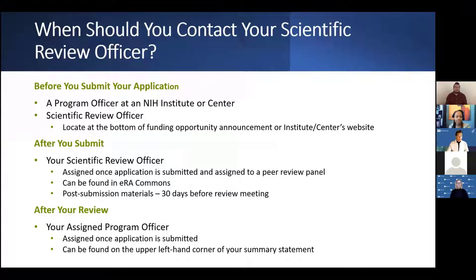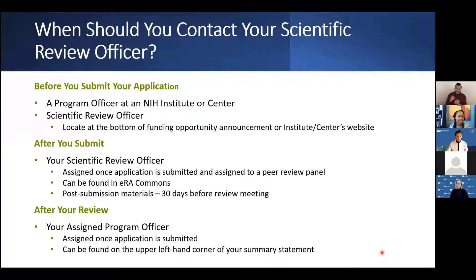Before you submit your application, if you have questions regarding whether a particular institute or center is appropriate for your application, that's when you contact a program officer. If you have questions regarding what study section to submit your application to, that's when you contact a scientific review officer. You can find contact information for program officers as well as scientific review officers at the bottom of the funding opportunity announcements you wish to apply under. After you submit your application, all questions are referred to your scientific review officer, whose contact information is located within ERA Commons.